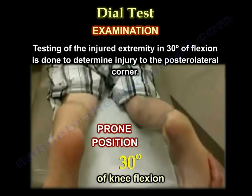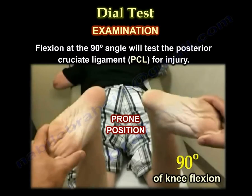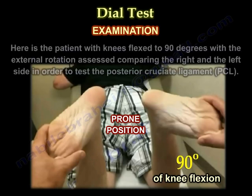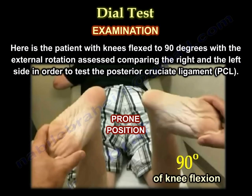Testing of the injured extremity at 30 degrees of flexion is done to determine injury to the posterolateral corner. Here the patient is prone, and the test is done at 30 degrees of knee flexion. Flexion at 90 degrees tests the posterior cruciate ligament. Here the patient's knee is flexed at 90 degrees, and external rotation is assessed comparing the right and left sides to test the posterior cruciate ligament.